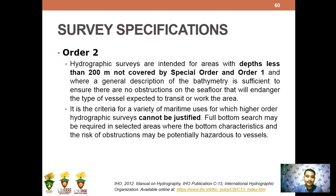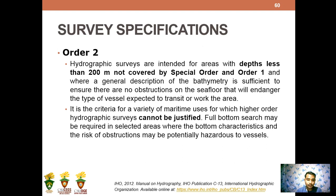Order 2 hydrographic surveys are intended for areas with depths less than 200 meters not covered by Special Order or Order 1, where a general description of the bathymetry is sufficient to ensure there are no obstructions on the seafloor that would endanger the type of vessels expected to transit or work in the area. Full bottom search may be required in selected areas where bottom characteristics and risk of obstructions may be potentially hazardous to vessels. The difference between Order 1 and Order 2 is mainly the water depth range covered.